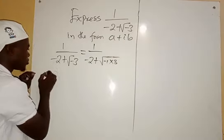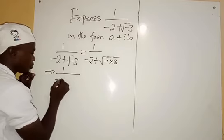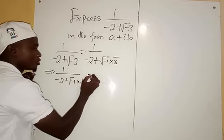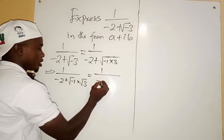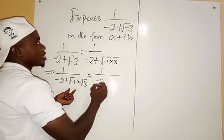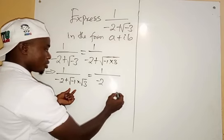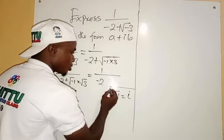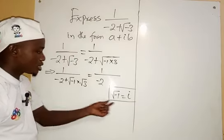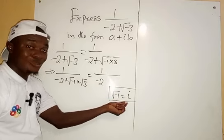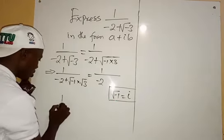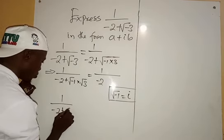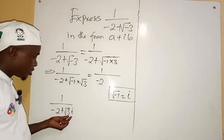So we have 1 over minus 2 plus root minus 1 multiplied by root 3. Now, don't forget that root minus 1 equals i — that is from the complex plane. So anywhere we see root minus 1, we replace it with i. This gives us 1 over minus 2 plus root 3 i.